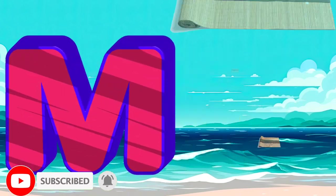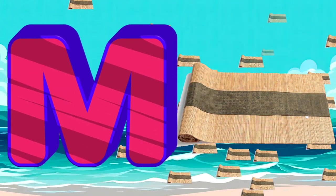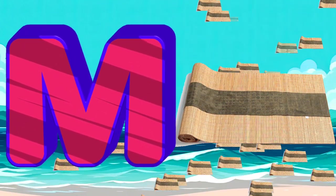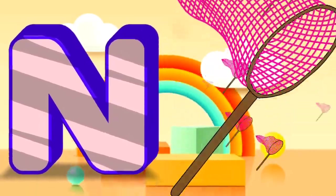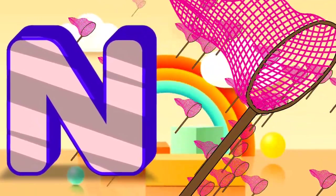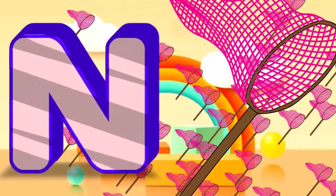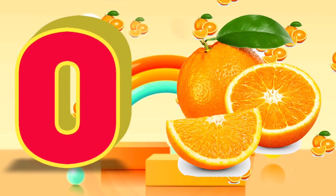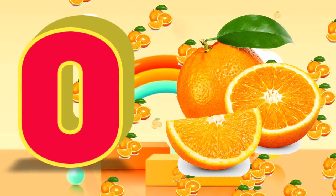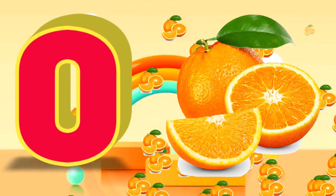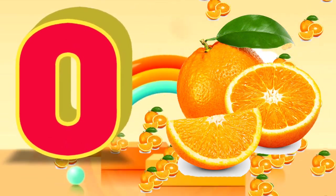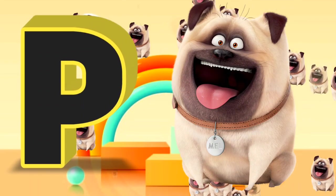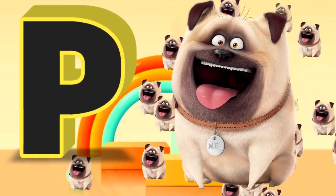M is for mat, m-m-mat. N is for net, n-n-net. O is for orange, o-o-orange. P is for pet, p-p-pet.